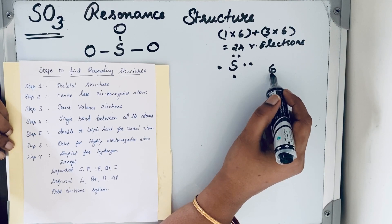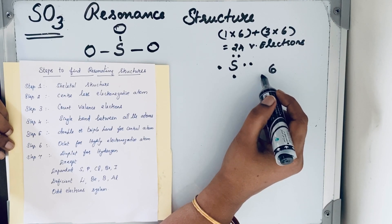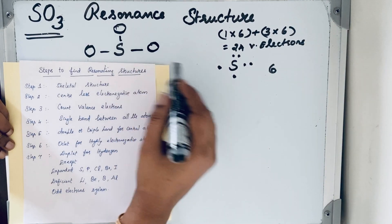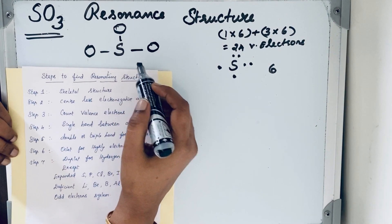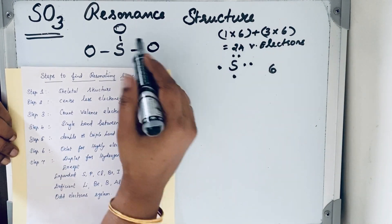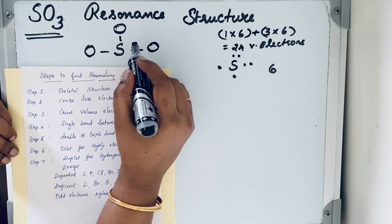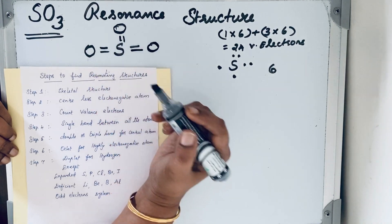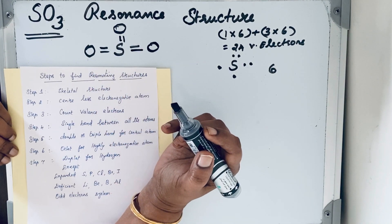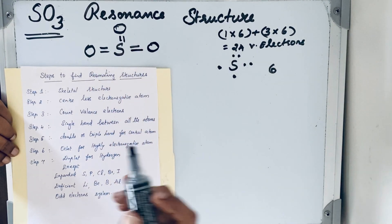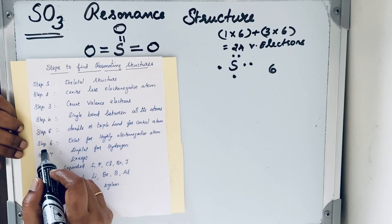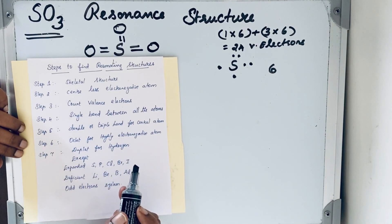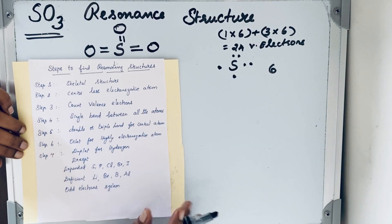Let us try to make six bonds in sulfur trioxide. Already three single bonds are present, so let us draw three more bonds — one, two, three. That gives us three double bonds total.